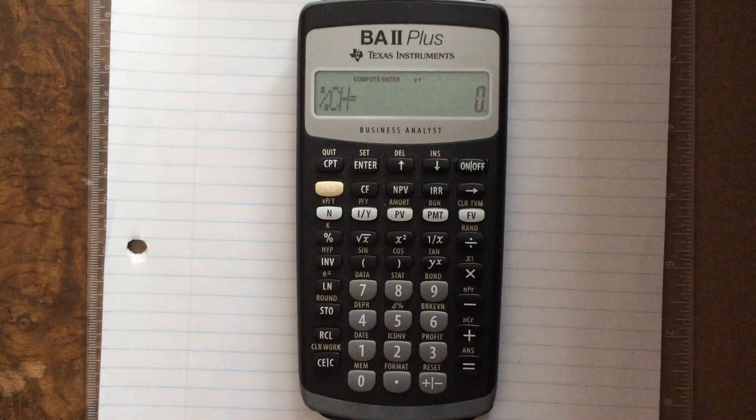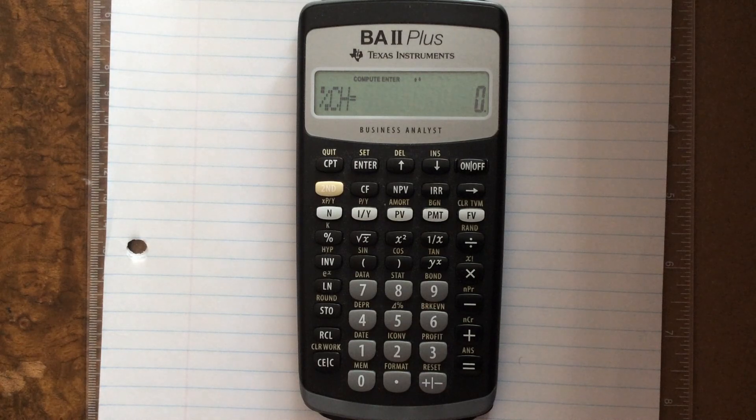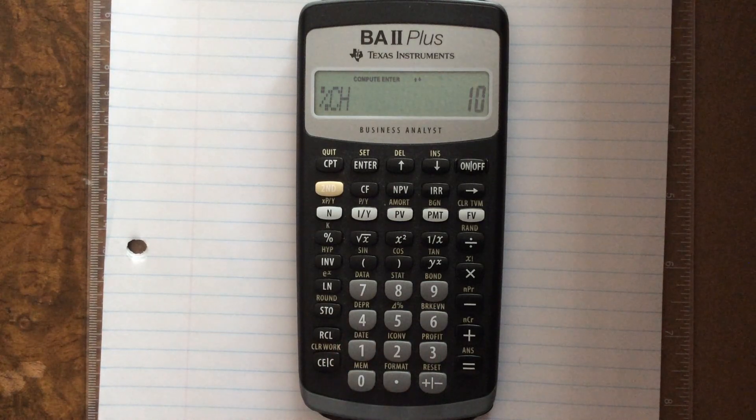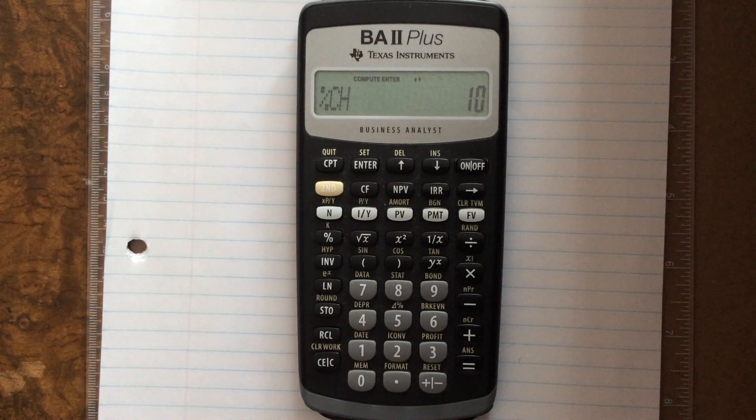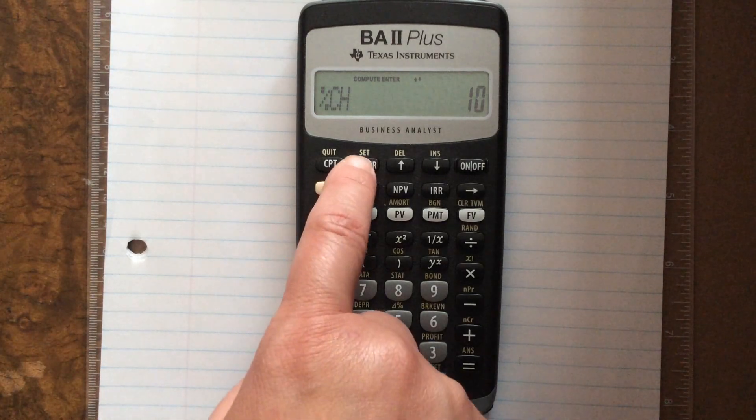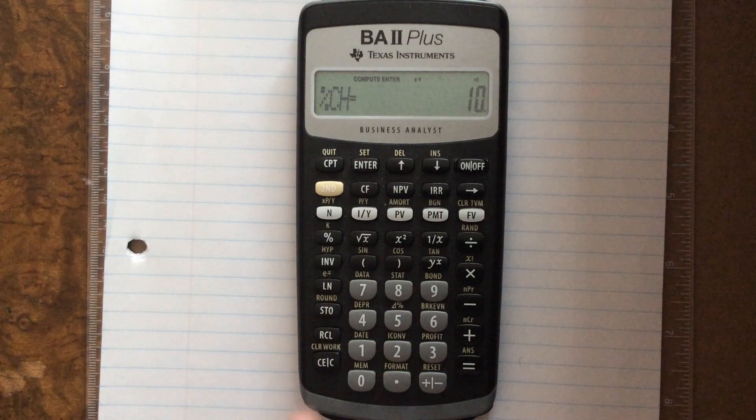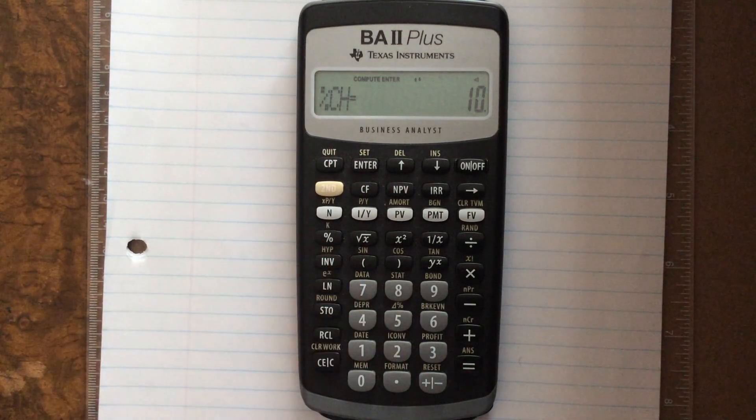I'm going to scroll down and look for percent change so that I can put that 10% in here. One thing that you need to know about the calculator: when you put percent change in, you do get to put it in as just a percent. When we use it in calculations, we have to convert it to a decimal. That's not the case when you put it in your calculator. I'm going to hit enter, and that locks it in.